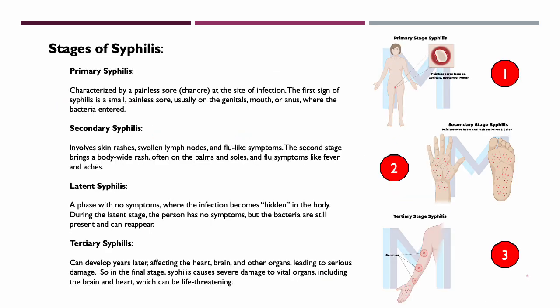Let's move on to the stages of syphilis. It begins with primary syphilis, which is characterized by a painless sore, also known as a chancre, at the site of infection. The first sign of syphilis will be a small, painless sore, usually found on the genitals, mouth, or anus, where the bacteria entered.